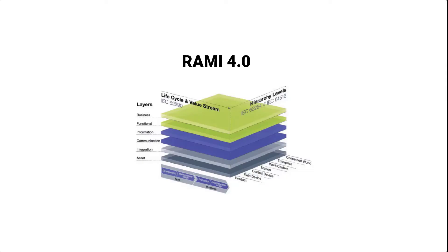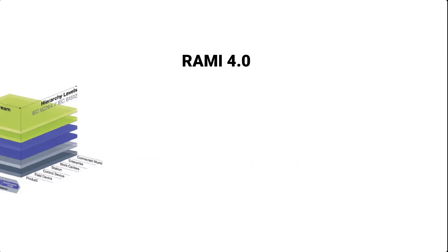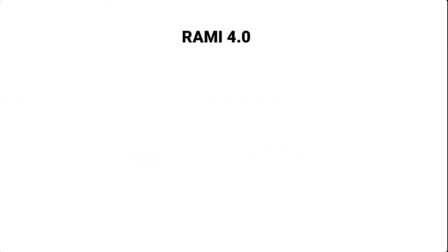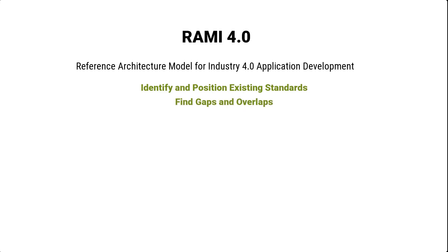Now we're going to look at the reference architecture model for Industry 4.0, otherwise known as RAMI 4.0. The goal of RAMI 4.0 is to come up with a framework representing a manageable architecture that can be used as a frame of reference for Industry 4.0 application development. It helps to identify and position existing standards and thus find gaps and overlaps when applying these standards.